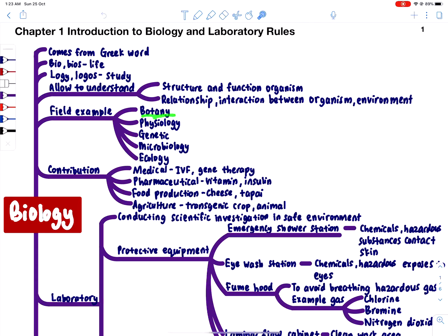We have different fields in biology. For example, botany involves plants — apa saja yang melibatkan tumbuhan, including factors affecting plant growth. Then we have physiology — animal physiology, plant physiology, and human physiology. Kalau medical doctor atau medical student, perubatan, selalunya dia akan study human physiology. They have anatomy and physiology — anatomy is more on structure, and physiology is how the communication and interaction between structures work, including adaptation to the environment and how it heals the body.